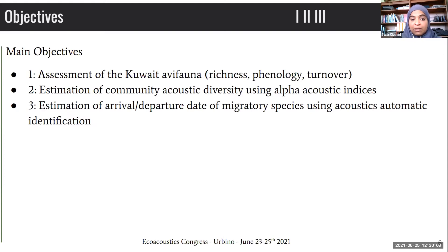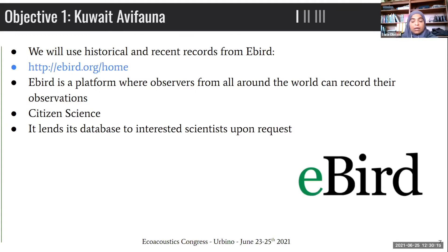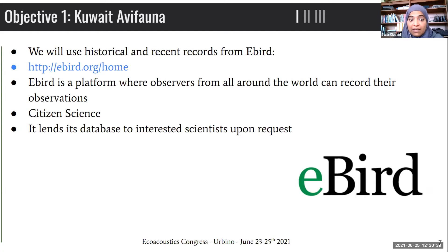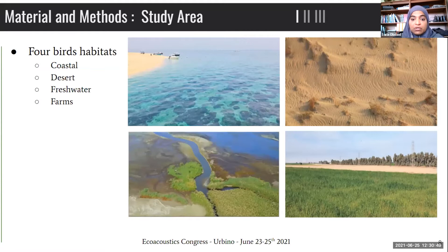The second objective is estimation of community acoustic diversity using the alpha acoustic indices. The third is estimation of the arrival and departure dates of migratory species using acoustic automatic identification. For the first objective, we use historical and recent records from eBird — a platform used by observers around the world to record their observations, recently used as citizen science, lending its database to interested scientists upon request. In this study, we chose four distinguished habitats in Kuwait: coastal, desert, freshwater, and farm habitats.